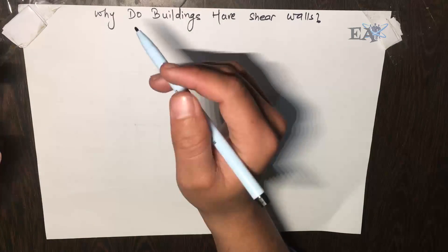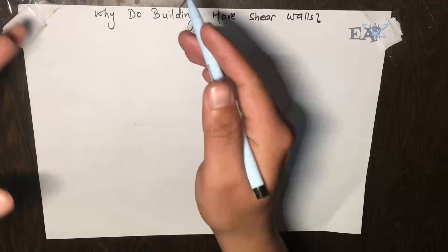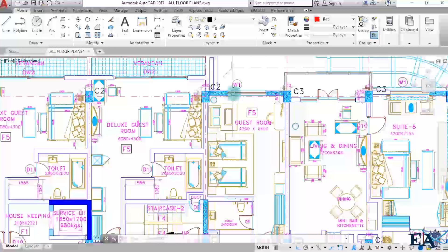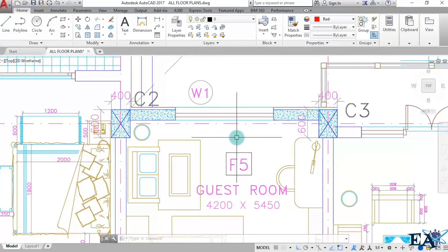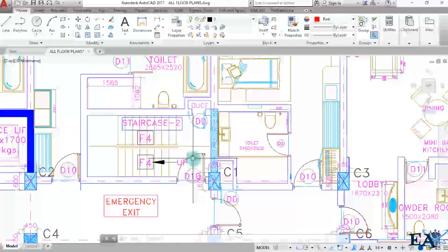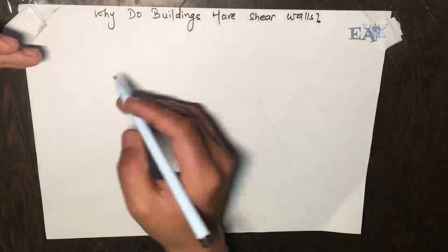Have you ever entered a building during its construction phase and seen a shear wall inside of the building? As you can see in this plan, there is the shear wall at this portion here. And here you can see the shear wall right. So we have been taught that a shear wall is made in order to resist the lateral force.